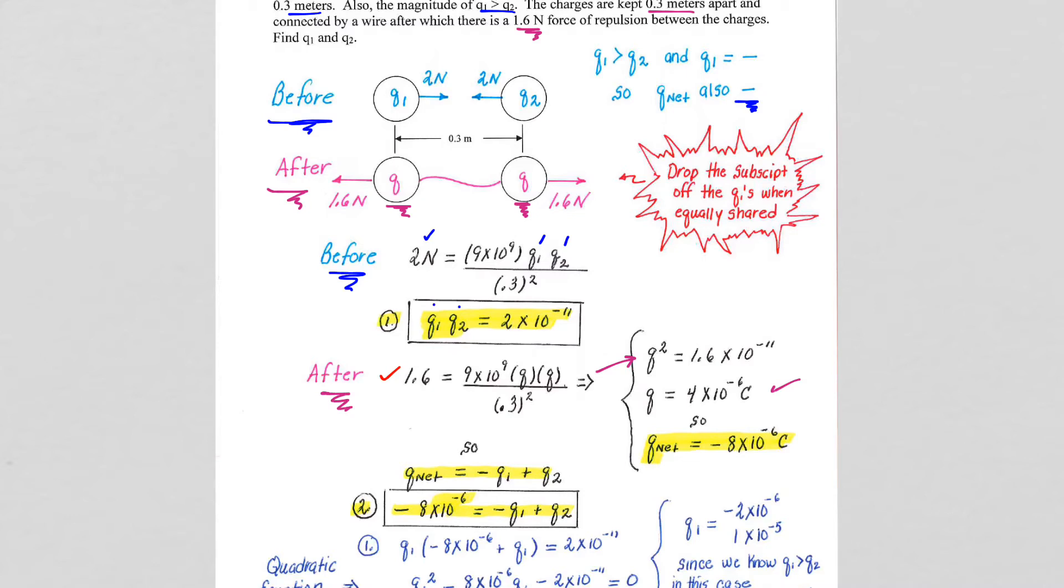So after they touch, just like in our last example, Q plus Q equals Q net, and here we're also going to put the negative out in front because we know Q net is negative from our initial problem. So yep, this is a little bit tricky.